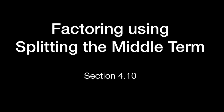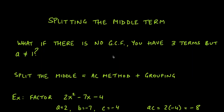Welcome to section 4.10. In this section we'll talk about how to factor trinomials using splitting the middle term. This is a technique used whenever we have a trinomial — something with three terms — but there is no GCF, or you found the GCF and you're left with three terms that have nothing else in common, and the leading coefficient is not one. It's a combination of the AC method and grouping, so it's more of a hybrid.